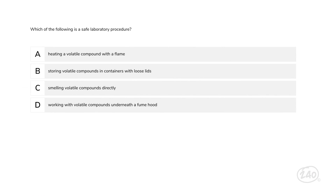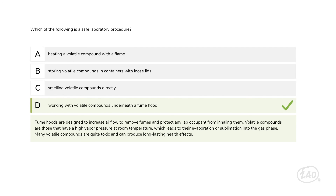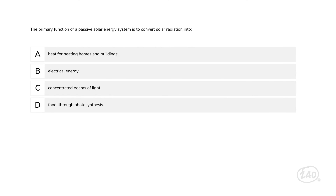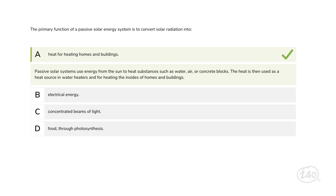Last category: the nature and impact of science and engineering. Which of the following is a safe laboratory procedure? Many volatile compounds are quite toxic and can produce long-lasting health effects. Fume hoods are designed to increase airflow to remove fumes and protect lab occupants from inhaling them — so that is the best answer. And finally, let's look at an impact of science question. The primary function of a passive solar energy system is to convert solar radiation into what? Passive solar systems use energy from the sun to heat substances such as water, air, or concrete blocks, and the warmth is then used as a heat source in water heaters and for heating the insides of homes and buildings — making that the best answer.